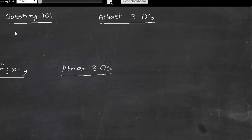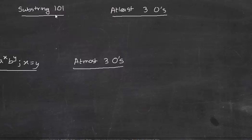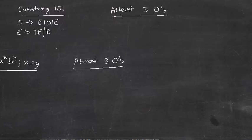Now let's look at some examples of how to write context-free grammars. Suppose we need to design a CFG for strings that have a substring of 1 0 1. We define a start symbol and a rule: 1 0 1 has to be there and we don't care what comes before or after. So E could be any symbol — E can be replaced by 1 E, or 0 E, or epsilon. So strings could be 1 0 1 0, 1 0 1 1, or 1 1 0 1 and so on. This is the context-free grammar rule for this.